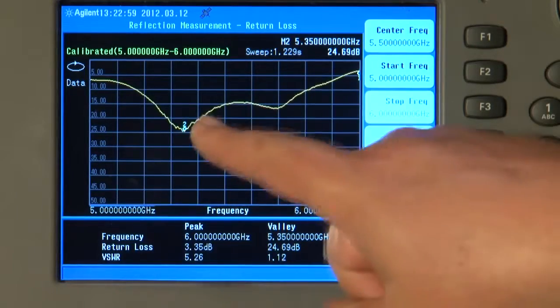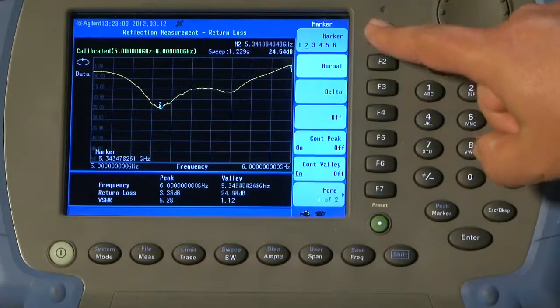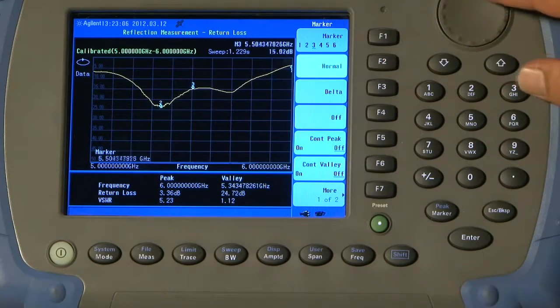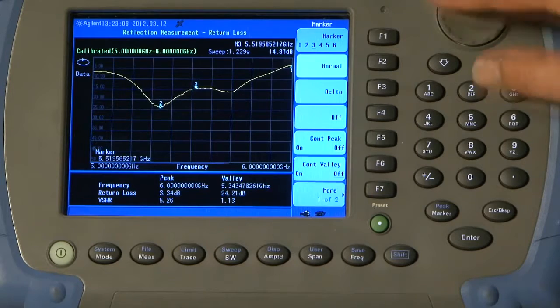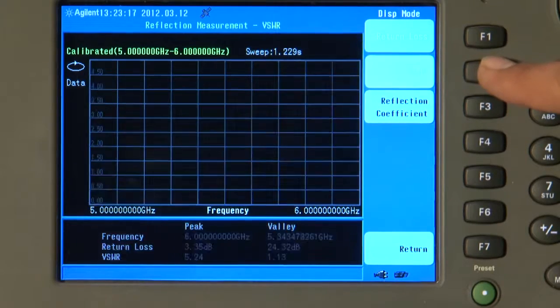We can move these markers manually if we wish, or add more markers by pressing the Marker button. I could turn on Marker 3, and I can move that with the knob. Also, if I press the Measure button, instead of displaying return loss, we can measure and display VSWR.